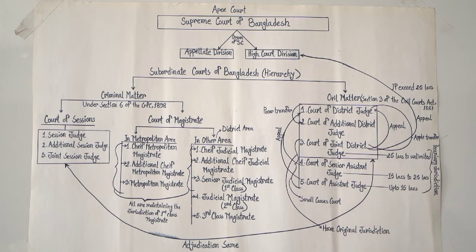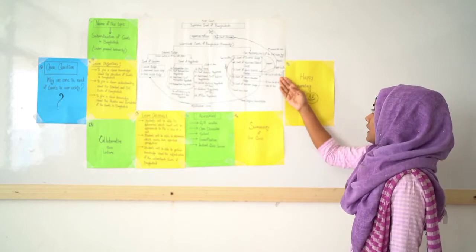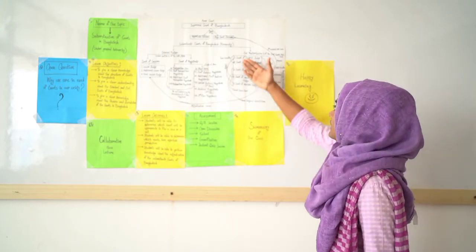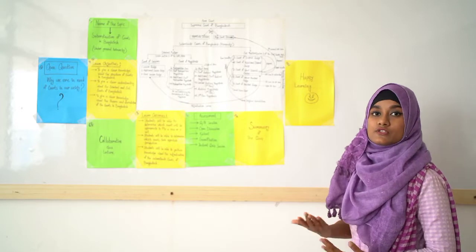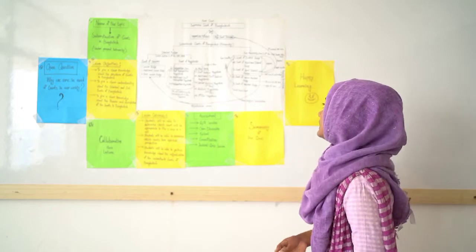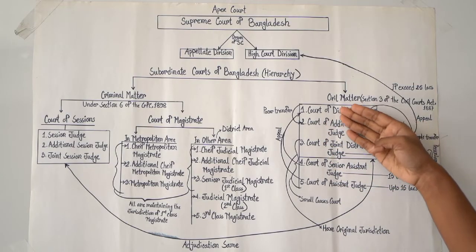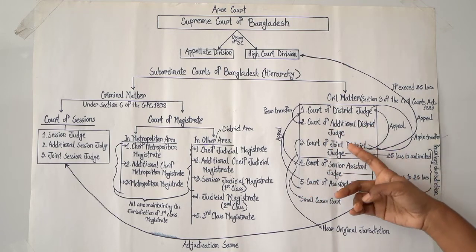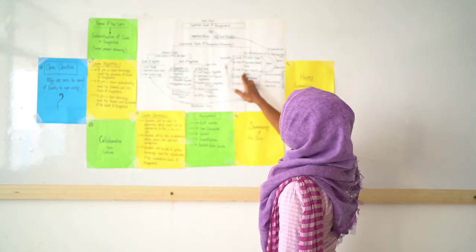In the case of the Senior Assistant Judge, the value of the suit must be between 15 lakhs and 25 lakhs. In the case of the Court of Joint District Judge, the value of the suit is from 25 lakhs and above, with no upper limit.